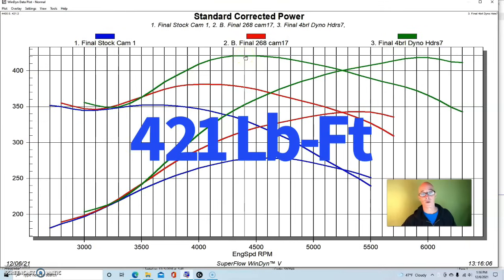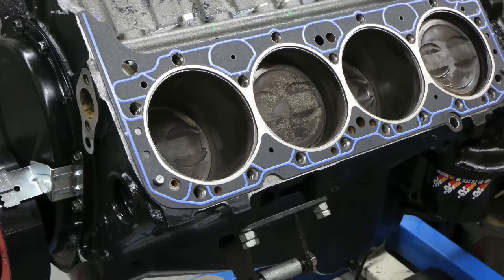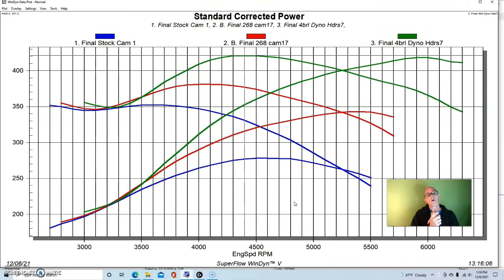and 421 foot-pounds of torque. Again, remember, not a hydraulic roller motor, hydraulic flat tappet motor. But we made a number of changes. First of all, we changed the short block. We didn't change the block or the crank or the rods, but we did update them. And what we did was the piston was about 15 thousandths